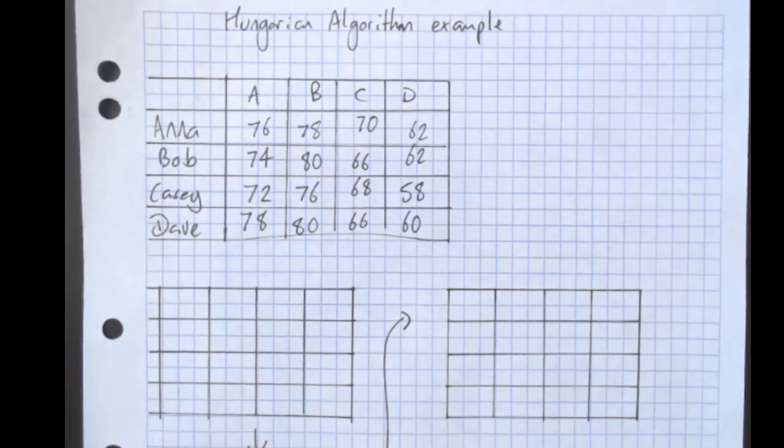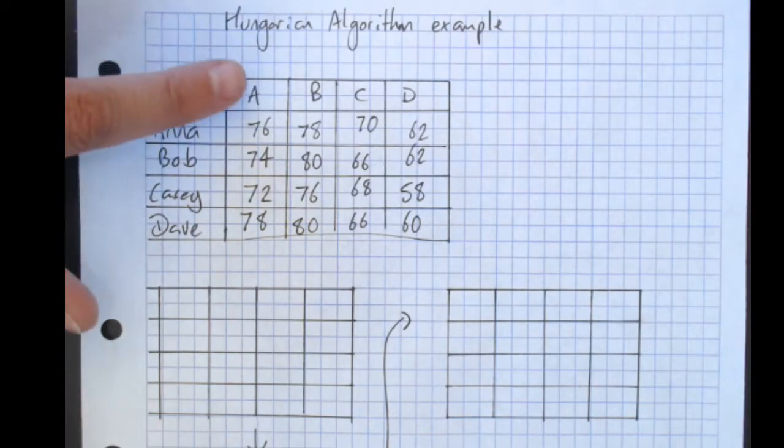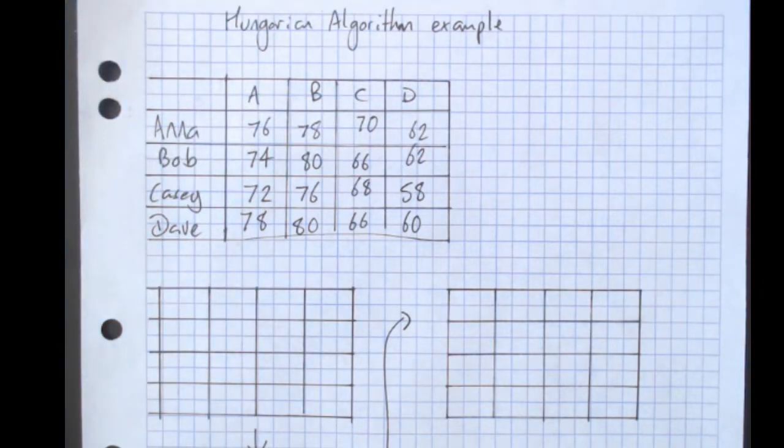This is an example of working through the Hungarian algorithm. It's roughly the same example as page 400 question 5. I've just gone Anna, Bob, Casey, Dave, and A, B, C, D to make things easier.